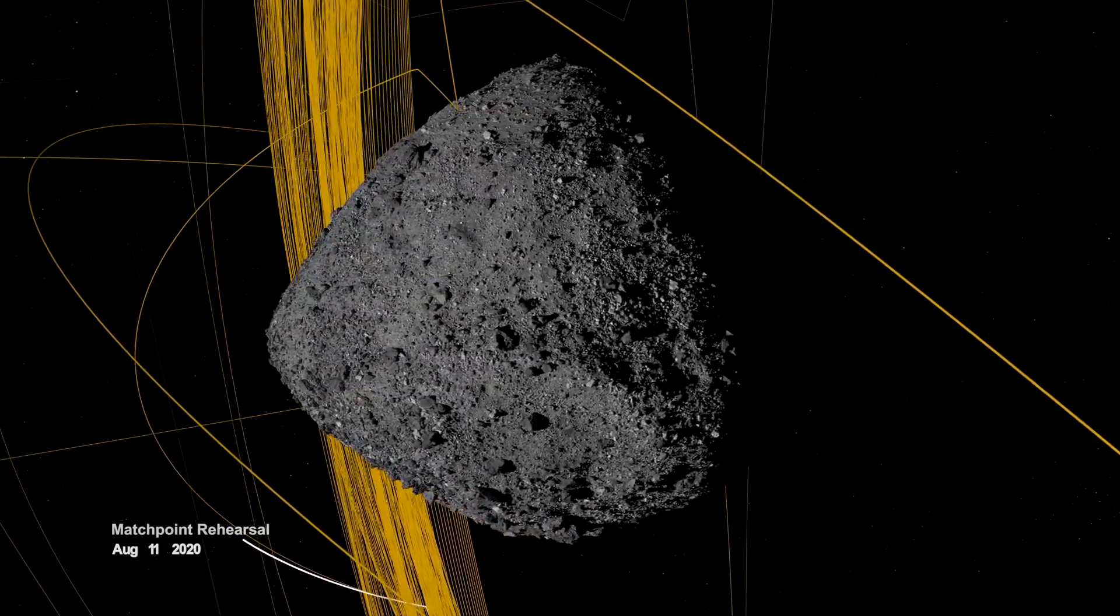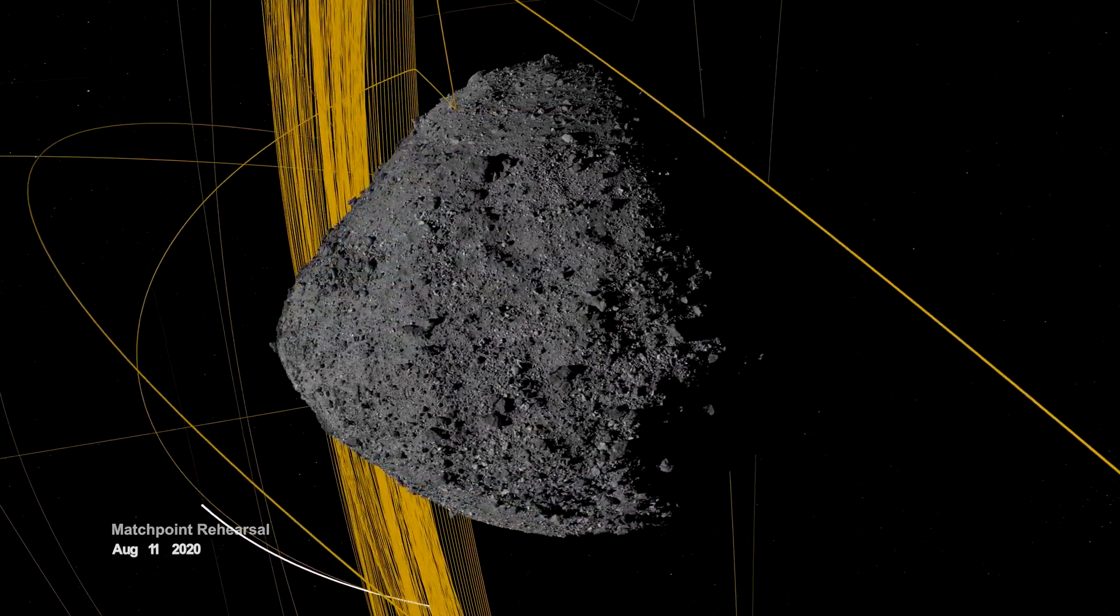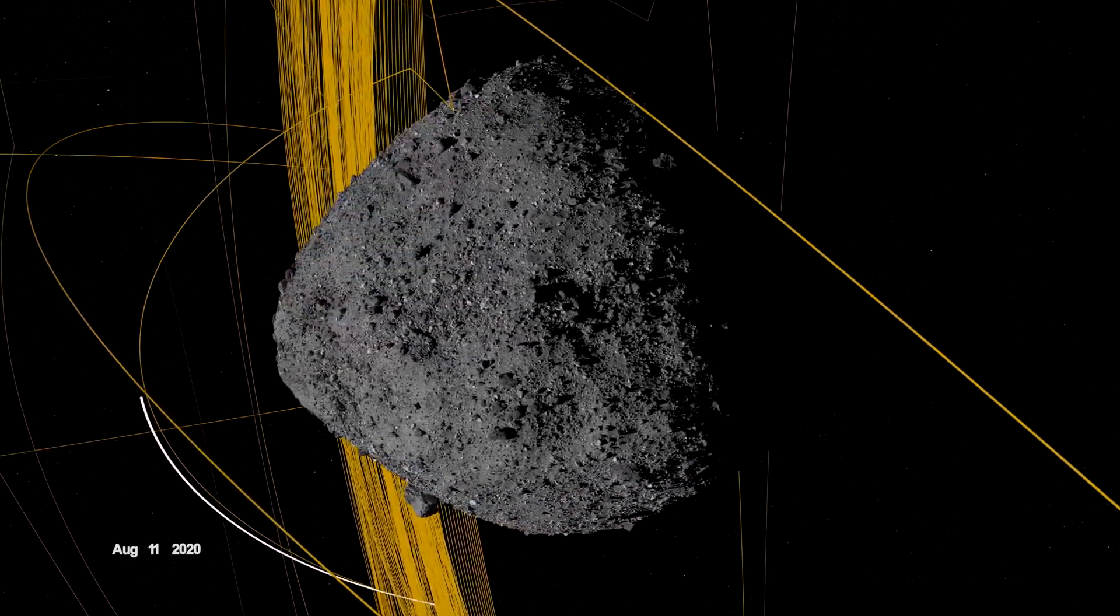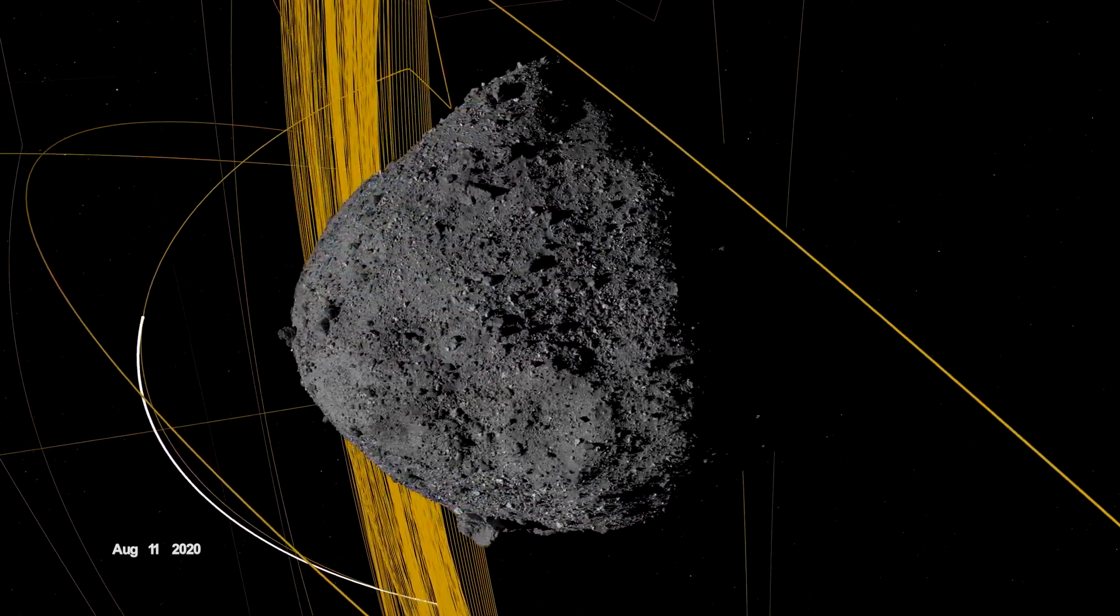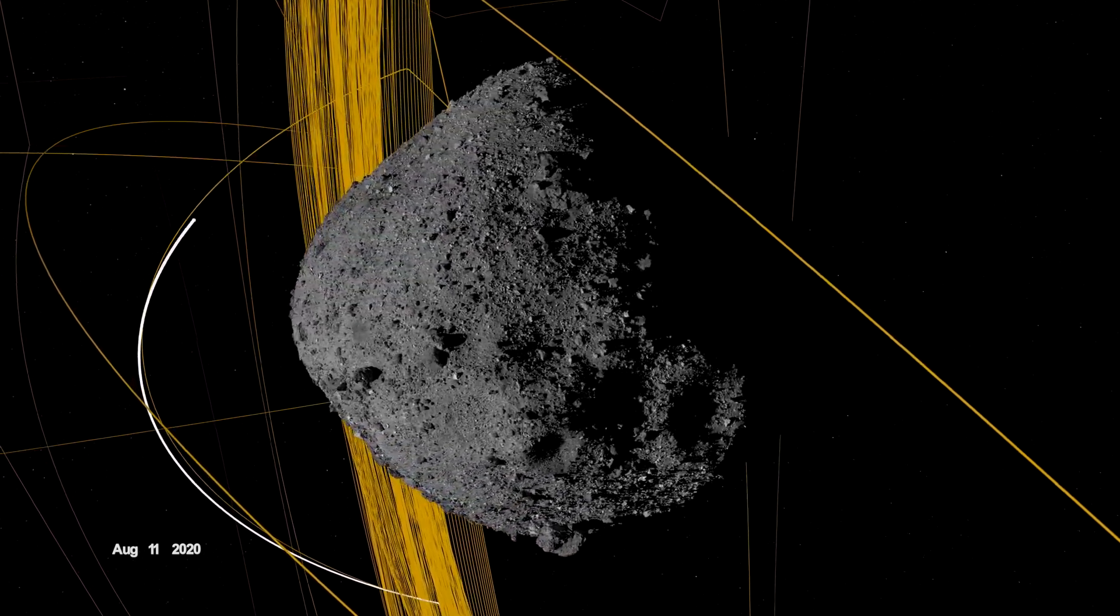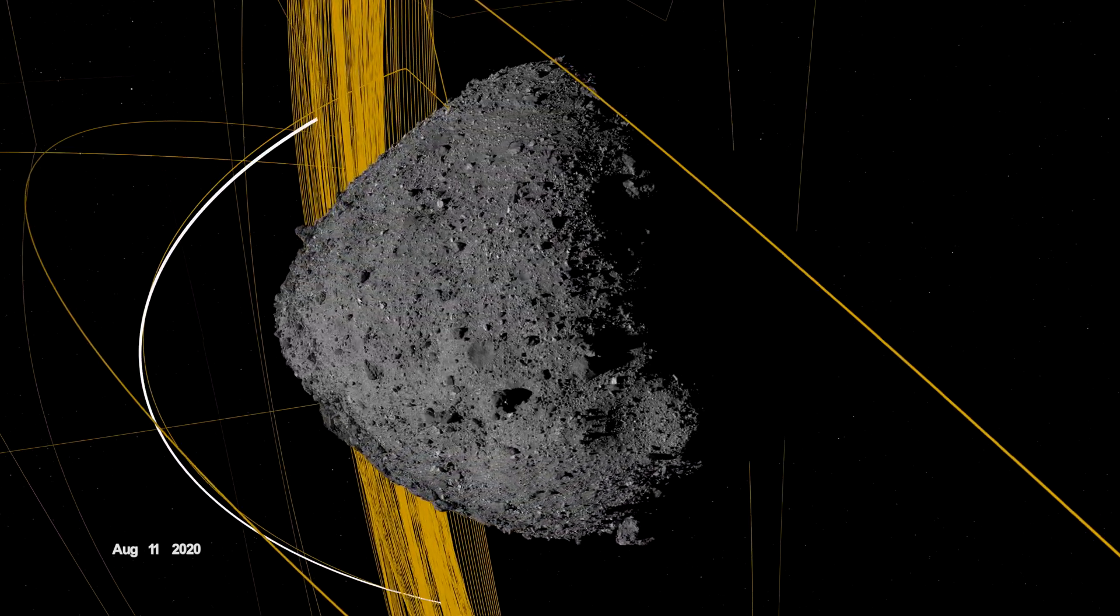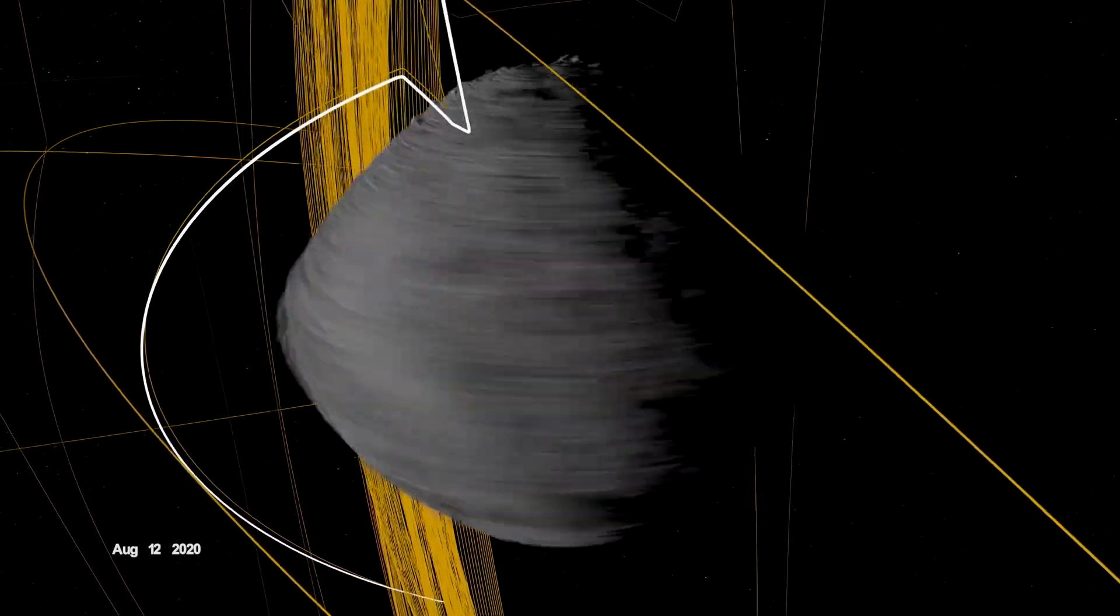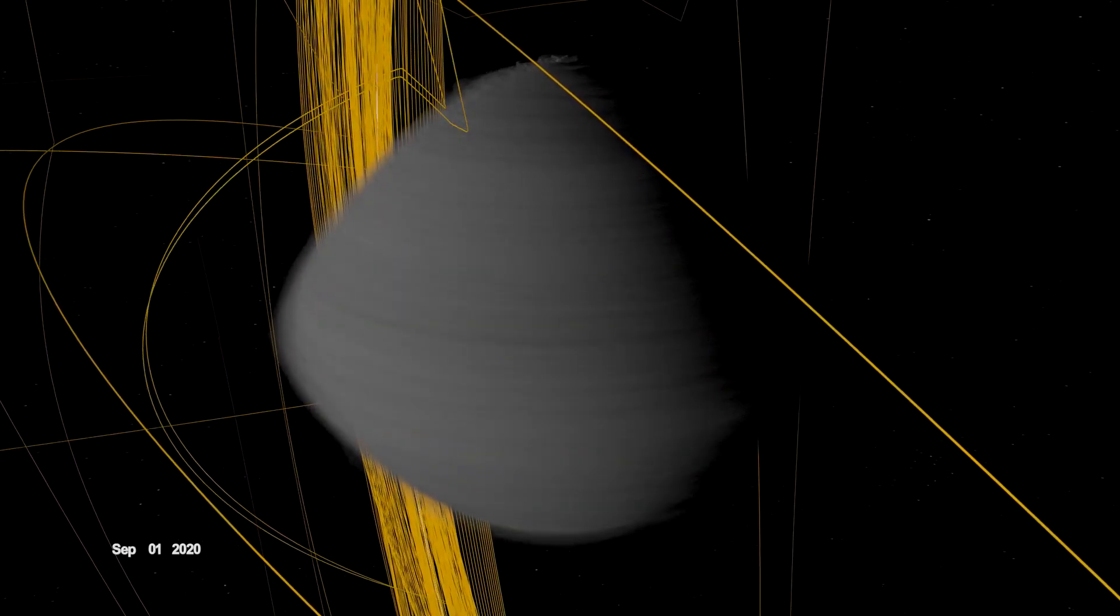On August 11th, OSIRIS-REx departed its home orbit and made a four-hour traverse to Bennu's northern hemisphere, retracing its earlier path. After performing the checkpoint engine burn to begin its descent, it made a second engine burn called Match Point to match Bennu's rotation before backing away at an altitude of approximately 40 meters.